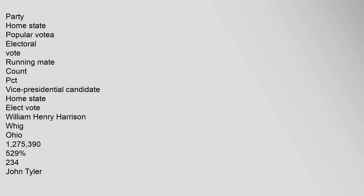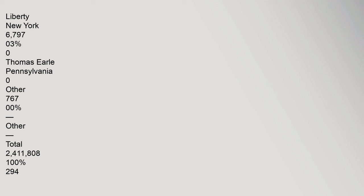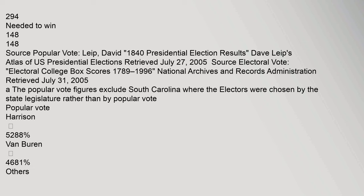Presidential candidate results: William Henry Harrison (Whig, Ohio) — Popular vote: 1,275,390 (52.9%), Electoral vote: 234, Running mate: John Tyler (Virginia), electoral votes: 234. Martin Van Buren (Democratic, New York) — Popular vote: 1,128,854 (46.8%), Electoral vote: 60, Running mate: Richard Mentor Johnson (Kentucky) 48, Littleton W. Tazewell (Virginia) 11, James Knox Polk (Tennessee) 1. James G. Birney (Liberty, New York) — Popular vote: 6,797 (0.3%), Electoral vote: 0, Running mate: Thomas Earl (Pennsylvania). Total: 2,411,808 votes; 148 needed to win.